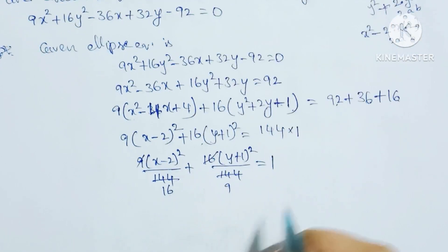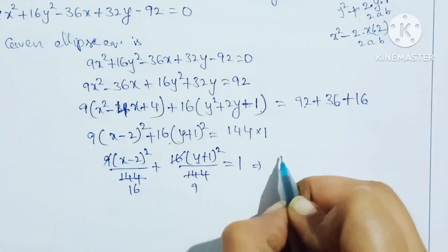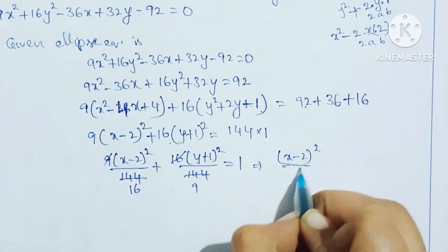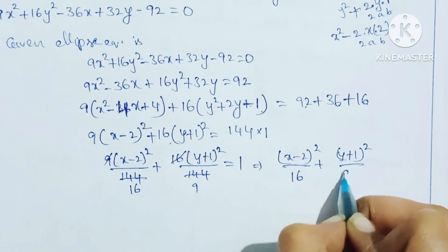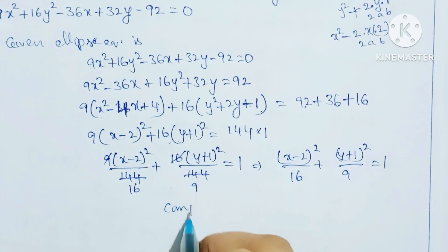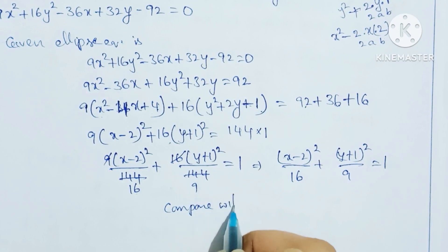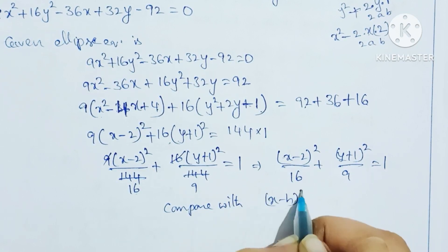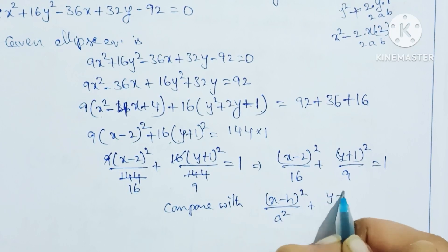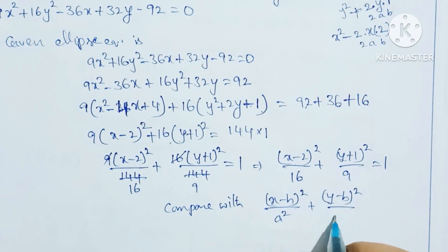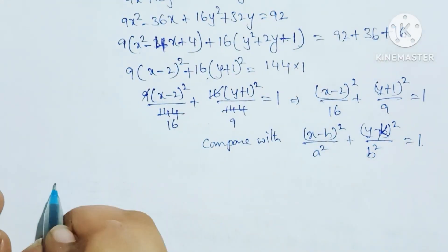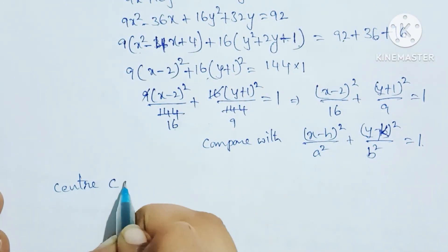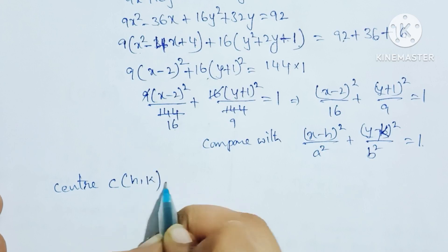This gives the standard ellipse equation: (x - 2)²/16 + (y + 1)²/9 = 1. This matches the standard form (x - h)²/a² + (y - k)²/b² = 1.